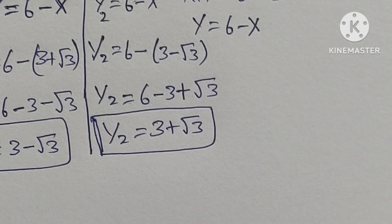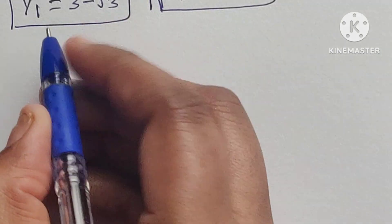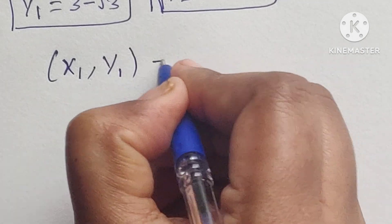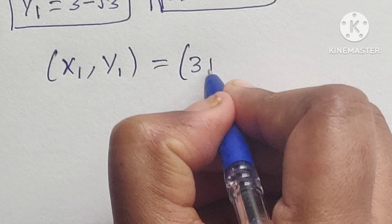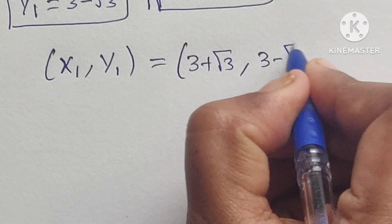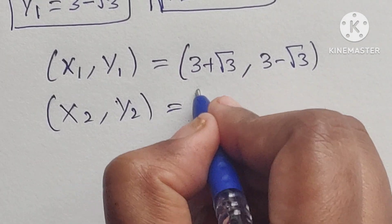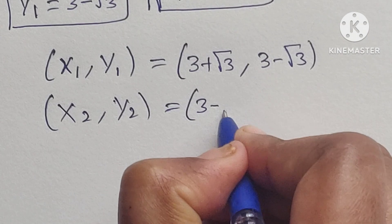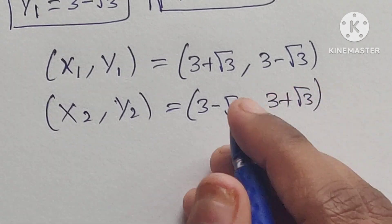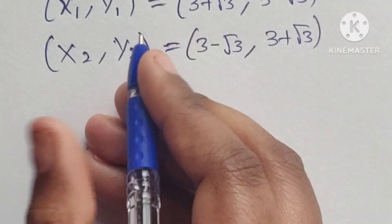So we got two x values and two y values. We can write the solution pairs as: (x1, y1) equals (3 plus square root of 3, 3 minus square root of 3), and (x2, y2) equals (3 minus square root of 3, 3 plus square root of 3). Let's verify these answers are correct.